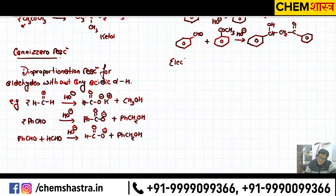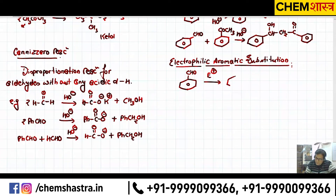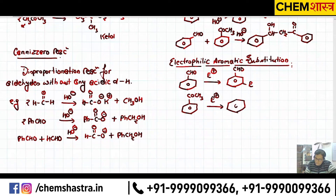Electrophilic aromatic substitution (EAS) for aromatic aldehydes and ketones: CHO is a meta-directing (electron-withdrawing) group. So any electrophile added will go to the meta position. Similarly COCH3 is also meta-directing. E⁺ goes meta in both cases. Examples: Cl2/AlCl3 → Cl at meta; fuming H2SO4 → SO3 at meta; HNO3/H2SO4 → NO2 at meta; RCl/AlCl3 → R at meta.